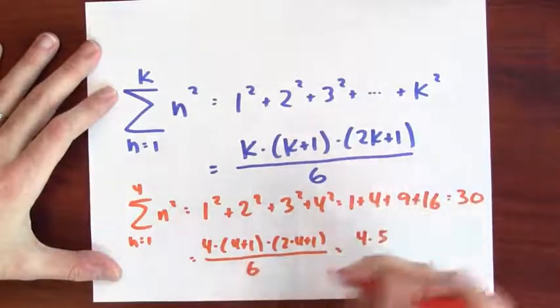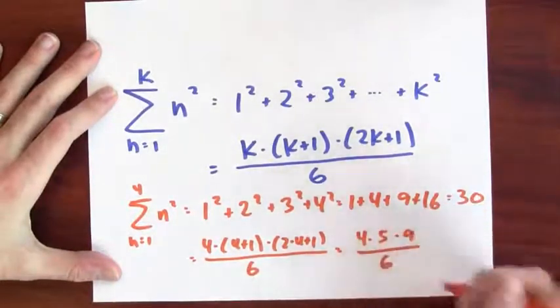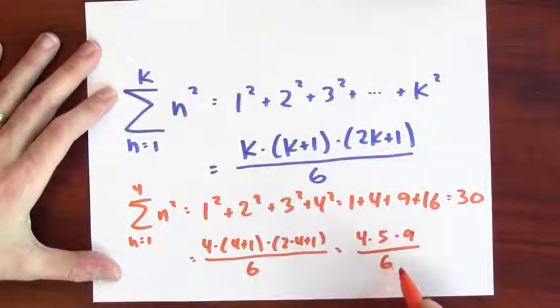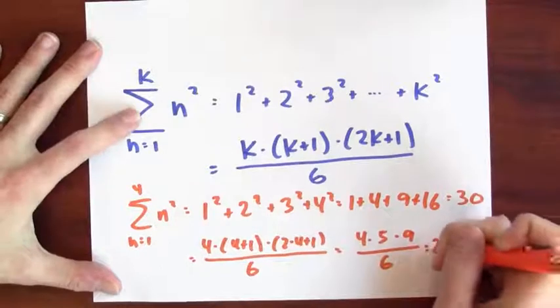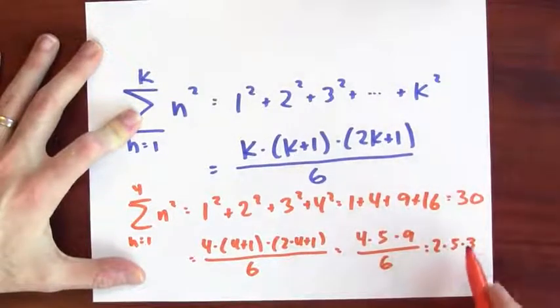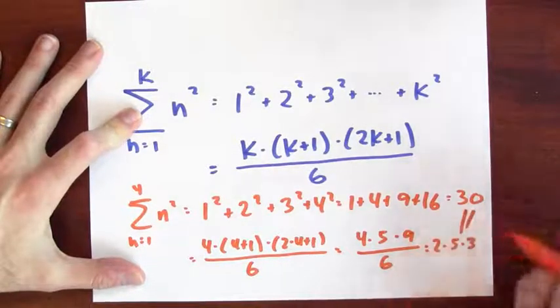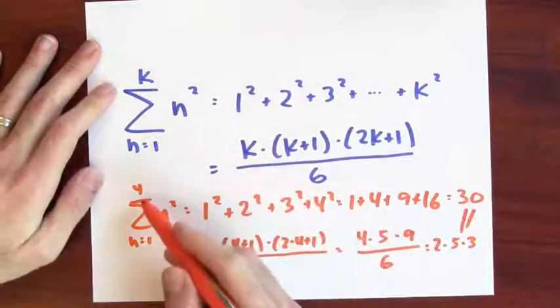Well, that's 4 times 5 times 2 times 4 plus 1 is 9 divided by 6. 6 is 2 times 3, so the 2 cancels part of the 4 and part of the 9 to give me 2 times 5 times 3. And yeah, 5 times 3 is 15, twice 15 is 30. It really works, at least for the value 4.